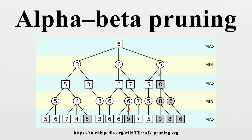Heuristic improvements: Further improvement can be achieved without sacrificing accuracy by using ordering heuristics to search parts of the tree that are likely to force alpha-beta cutoffs early. For example, in chess, moves that take pieces may be examined before moves that do not, or moves that have scored highly in earlier passes through the game tree analysis may be evaluated before others. Another common and very cheap heuristic is the killer heuristic, where the last move that caused a beta cutoff at the same level in the tree search is always examined first. This idea can also be generalized into a set of refutation tables.